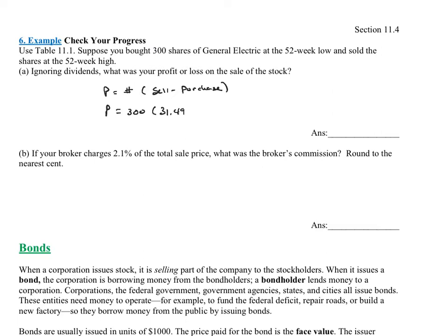And then let's look at the purchase price, which was the 52-week low. Looks like I'm getting $19.37 as my low. So let's go ahead and put this into our calculator and see what we get for our profit or loss.